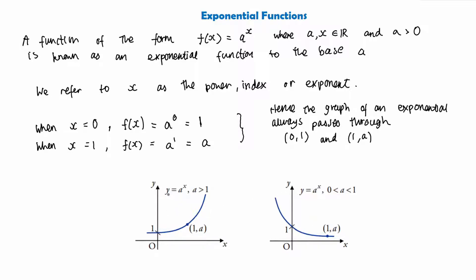To visualize this with a couple of examples — if we have y = a to the power of x, the standard exponential function passes through (0, 1) and (1, a). When a is greater than one, the exponential will look like this shape going upward, but when a is between zero and one, the function will look like this shape going downward to the right.